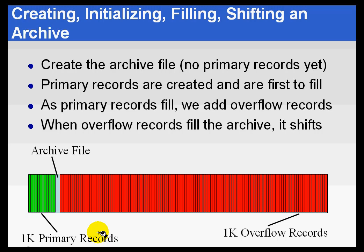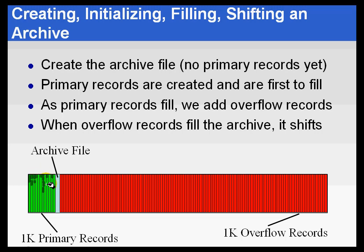As time goes on, within a few minutes of doing that allocation, those primary records are going to start to fill up. Each primary record corresponds to a different PI tag — a temperature transmitter, a second tag, a third tag, and so on — in no particular order. As data comes in, we start filling up these primary records. Some fill fairly quickly and some fill slowly. For example, a lab input tag may only get one value every day, so it gradually fills over time.